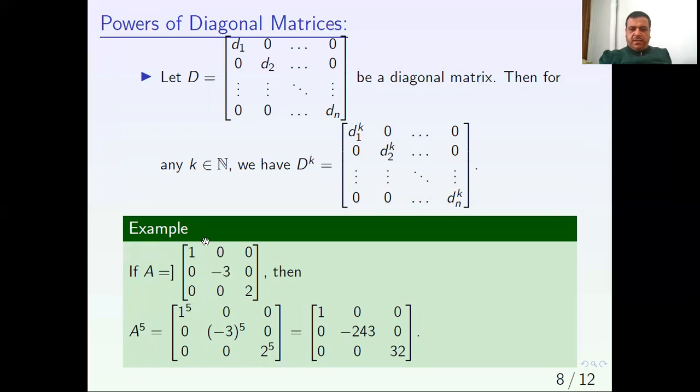Then A power 5 becomes a diagonal matrix. All we need to do is raise each element on the diagonal to power 5: 1 to the 5th, -3 to the 5th, 2 to the 5th. So we get 1 to the 5th equals 1, -3 to the 5th equals -243, 2 to the 5th equals 32, and the remaining elements are 0 in this form.